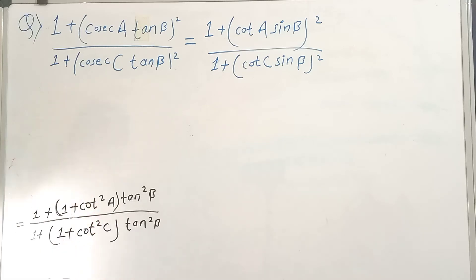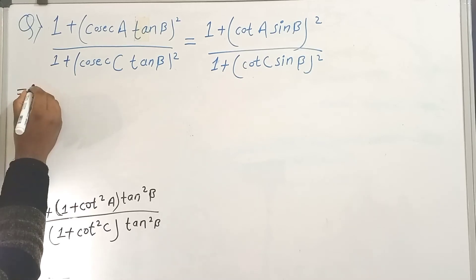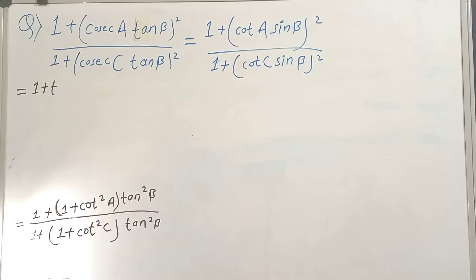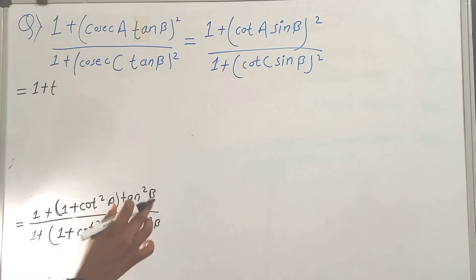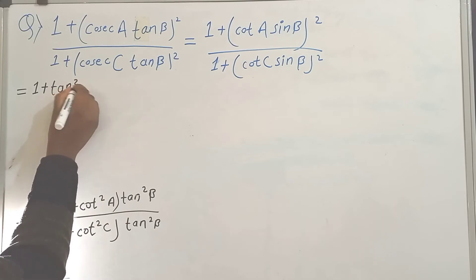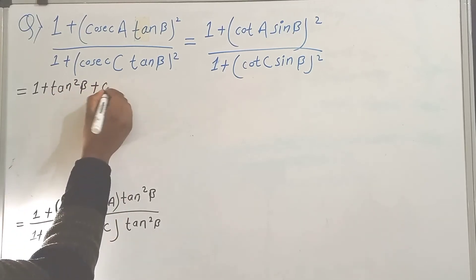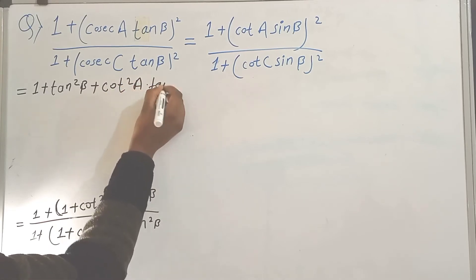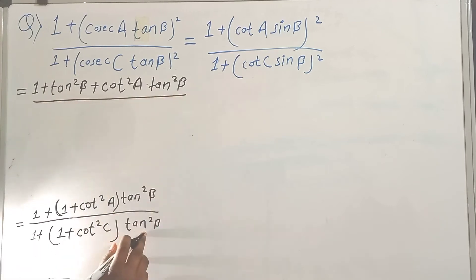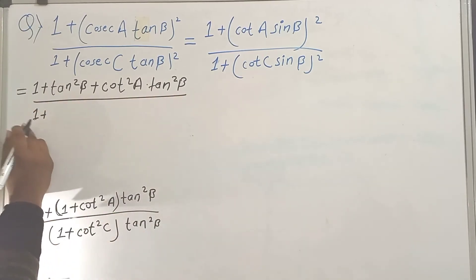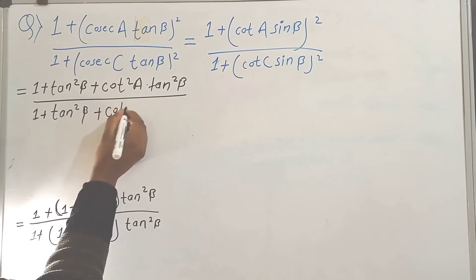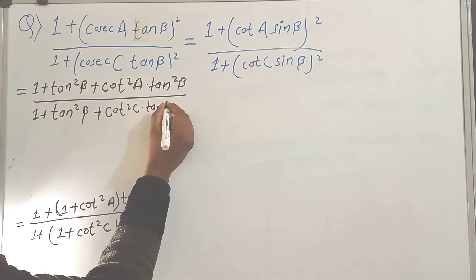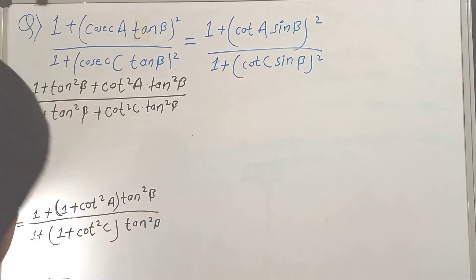Multiply — so equals to 1 plus tan square b, tan multiplied. So: tan square beta plus cot square a. Cot square a into tan square beta upon tan square beta multiplied. One plus... tan square beta plus cot square c.